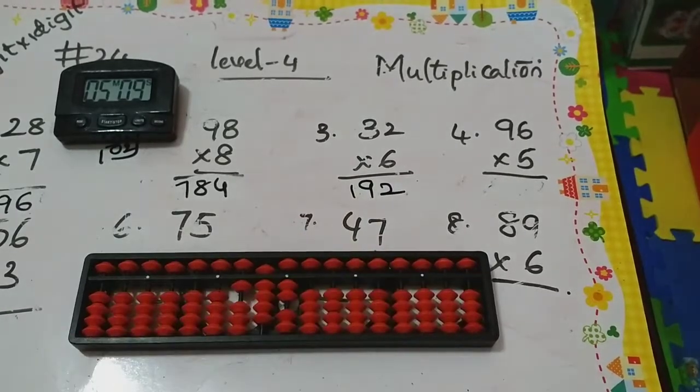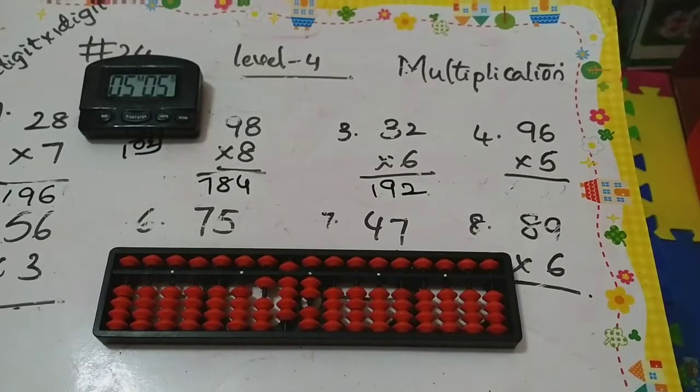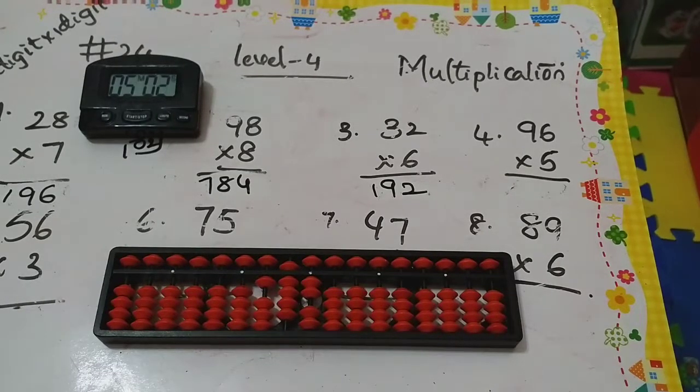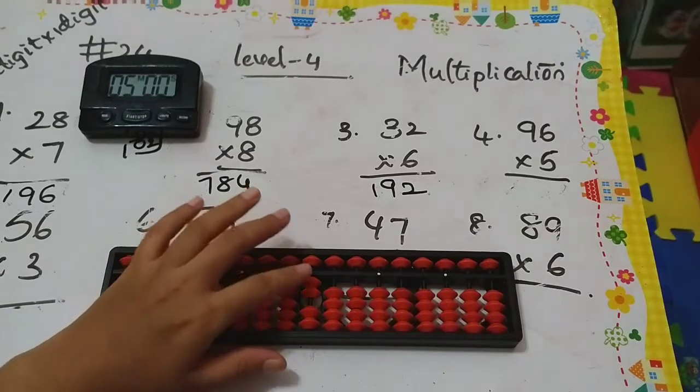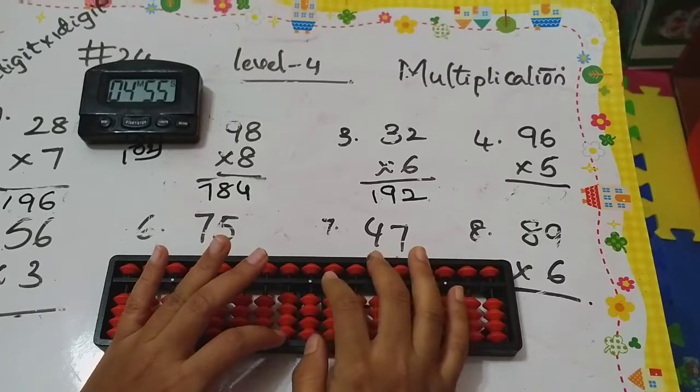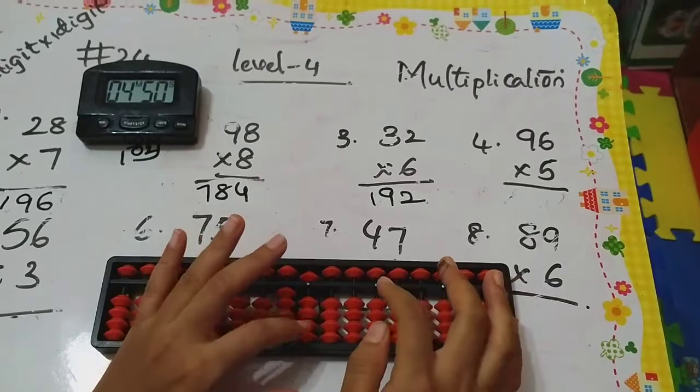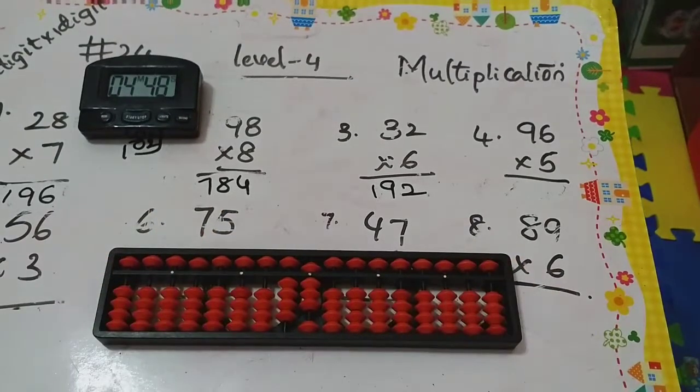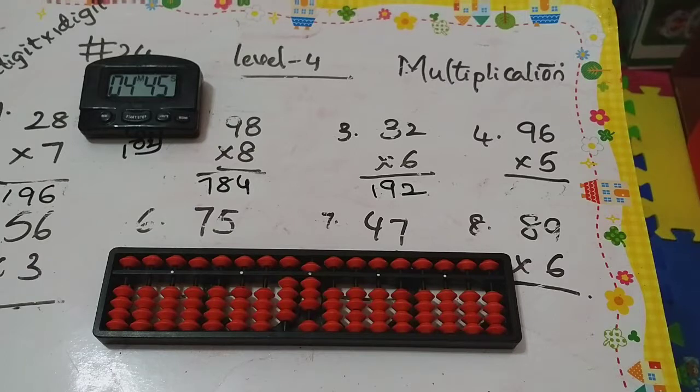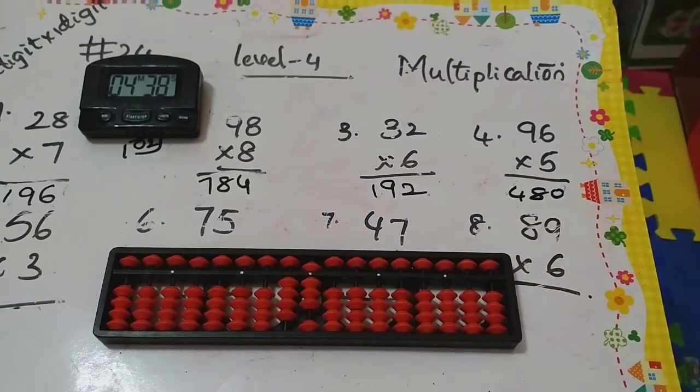Next one: 96 times 5. So 9 fives are 45, and 5 sixes are 30. So what's the answer? 480. Write down 480. Good job.